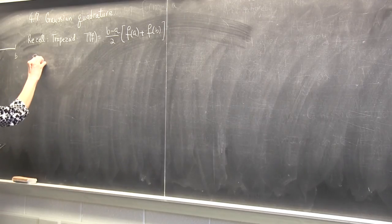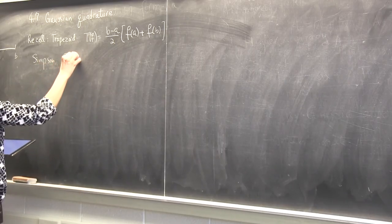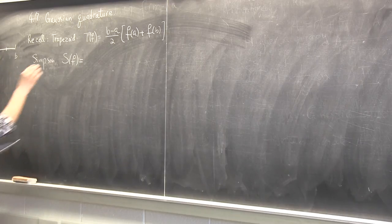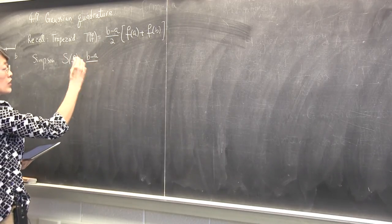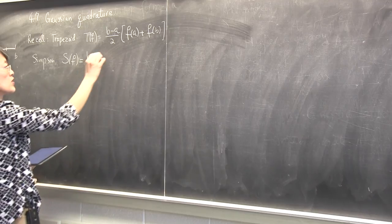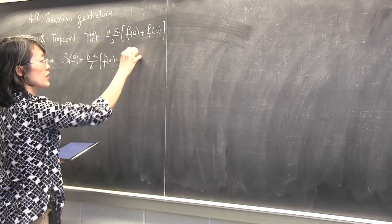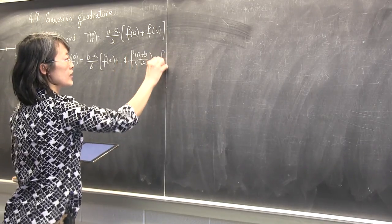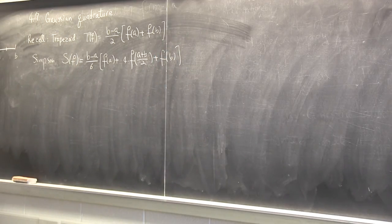What about Simpson's rule? We introduced a midpoint. So it's (b minus a)/2 as h, and the rule is h/3, so it's over 6 of f(a) plus 4 times the midpoint plus the point on the right. That's Simpson's rule.